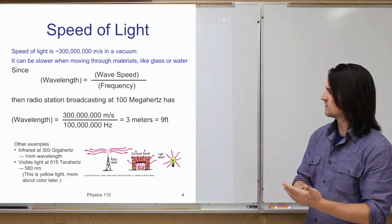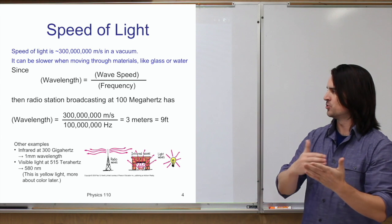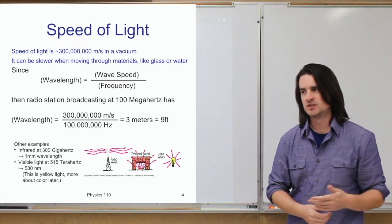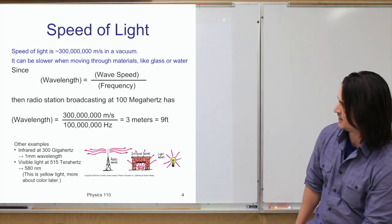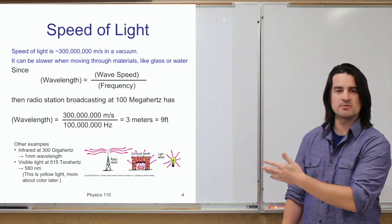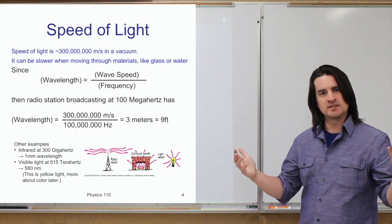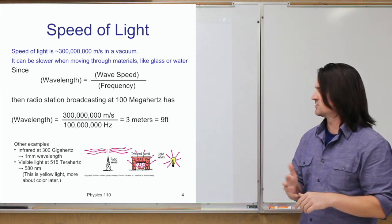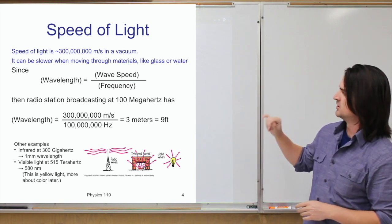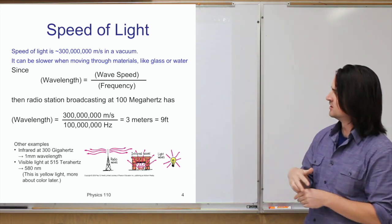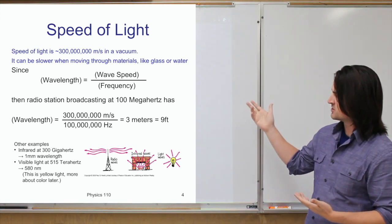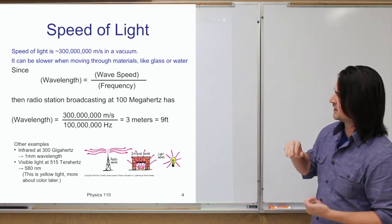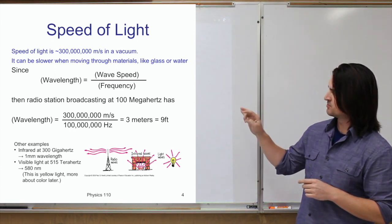We can calculate the wavelength of different electromagnetic waves. For instance, if you're listening to an FM radio station broadcasting at around 100 megahertz — like 105.3 MHz — the wavelength would be the speed of light divided by the frequency: 300 million meters per second divided by 100 million hertz. It turns out the wavelength of that station's broadcast is about 3 meters, which is about 9 feet — bigger than you.